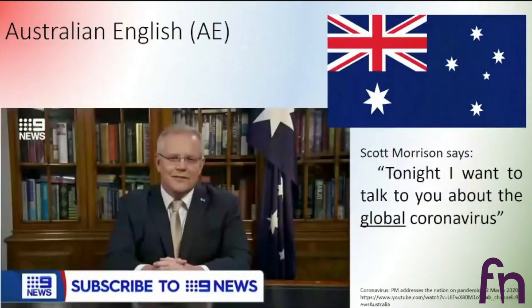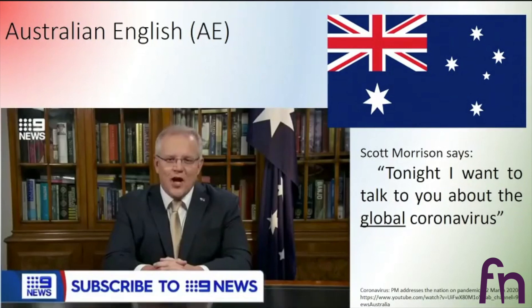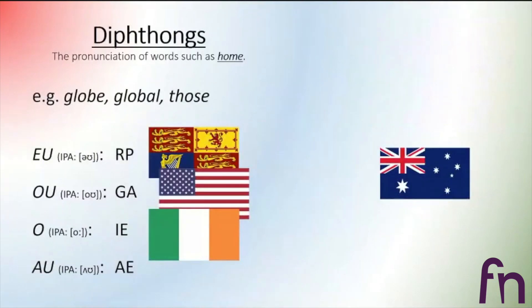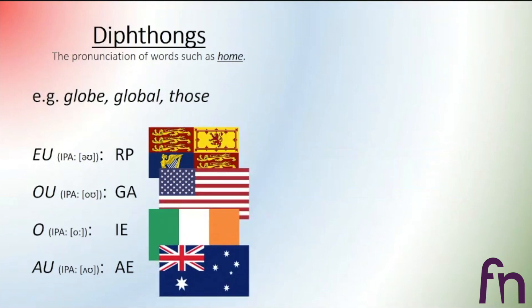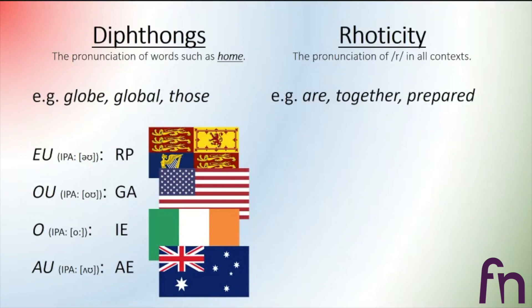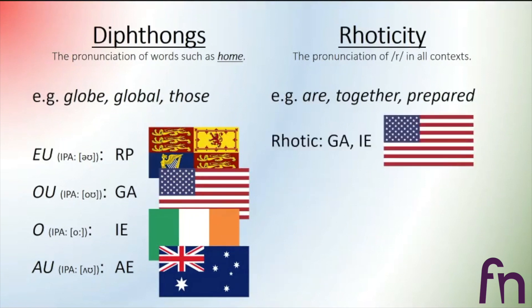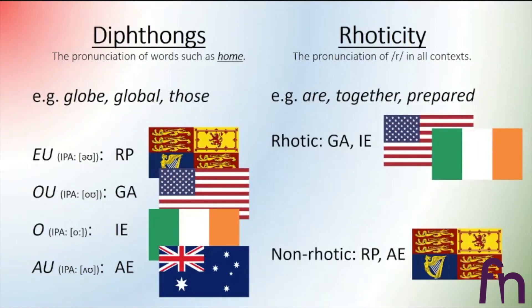The Australian English speaker says: 'Tonight I want to talk to you about the global coronavirus.' Let's hear the word 'global'. It is very soft and subtle — he doesn't say 'global' or 'global'. He says something like 'global' — a different vowel. To summarize rhoticity: the rhotic dialects are General American and Irish English, and the non-rhotic dialects are RP and Australian English.